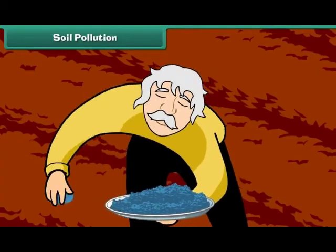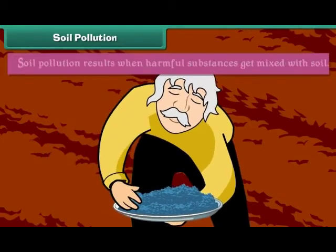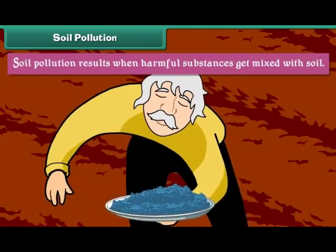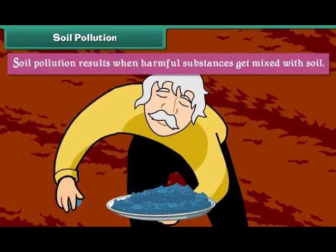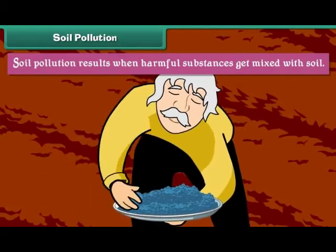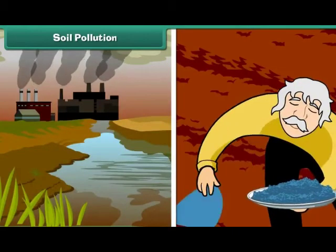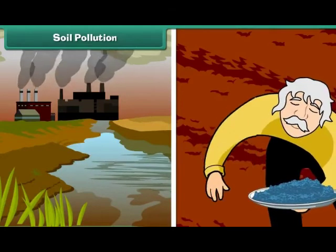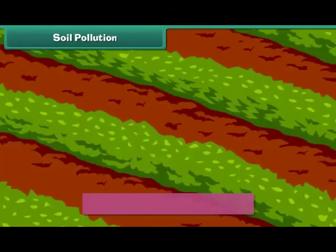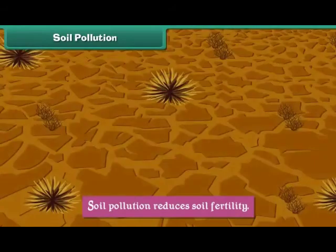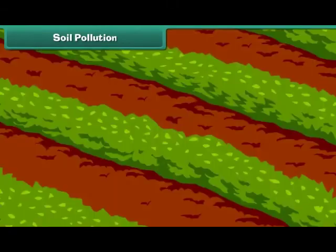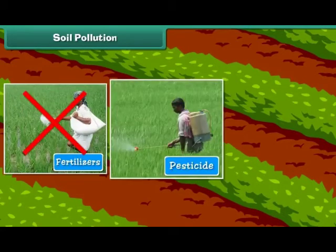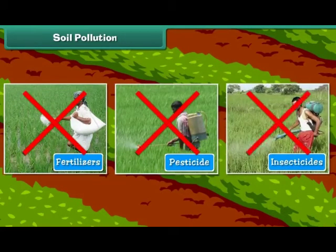Soil Pollution. Soil pollution results when harmful substances get mixed with soil. Industrial waste, fertilizers, pesticides and insecticides pollute soil. Soil pollution reduces soil fertility. We can prevent soil pollution by reducing usage of fertilizers, pesticides and insecticides.